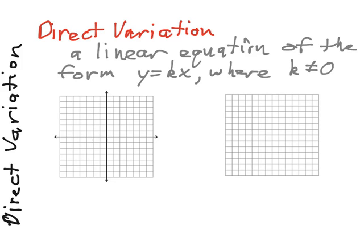Basically what this means is we have a direct relationship, a straight line that passes through the origin. Now if we were to solve this equation for k, we come out, y equals kx, there's multiplication here, so we're going to divide both sides by x.